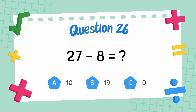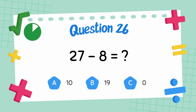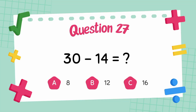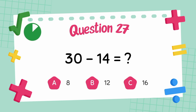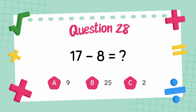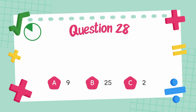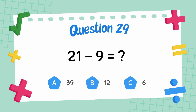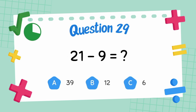What is 27 minus 8? The answer is 19. What is 17 minus 8? The answer is 9. What is 21 minus 9? The answer is 12.